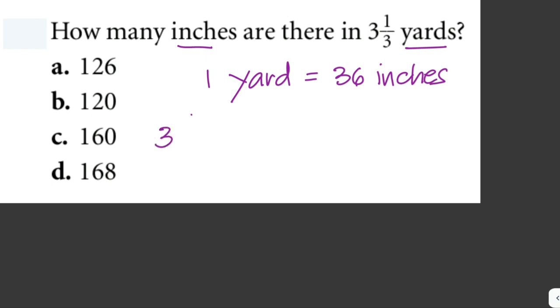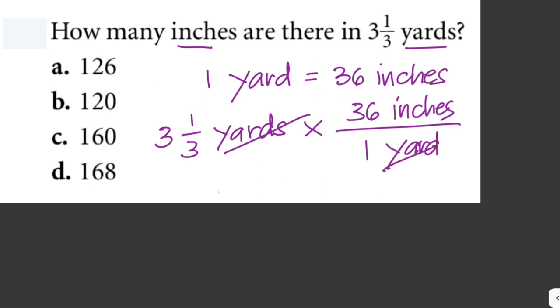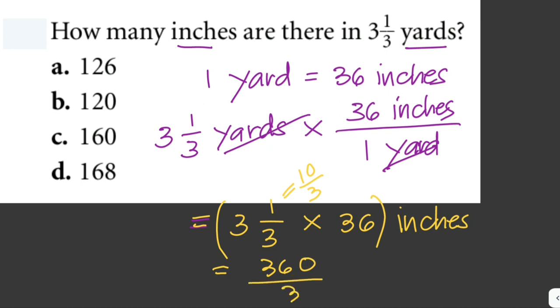Okay, and then we convert 3 and one third yards to inches. So that is times 36 inches per yard. So the yard unit here cancels out. So our answer would be 3 and one third times 36 inches. And 3 and one third can be written as 10 over 3. So this is just 10 over 3 times 36. So this is 360 over 3, which is just equal to 120 inches. So our answer here is letter B.